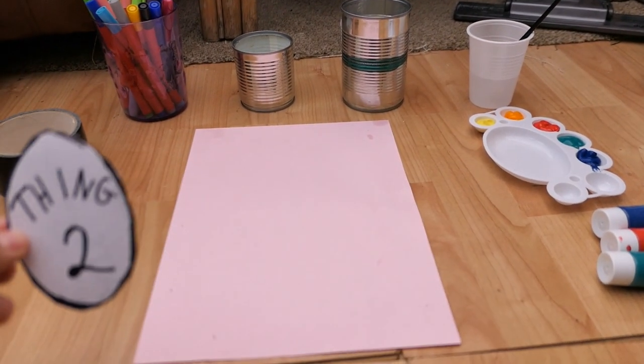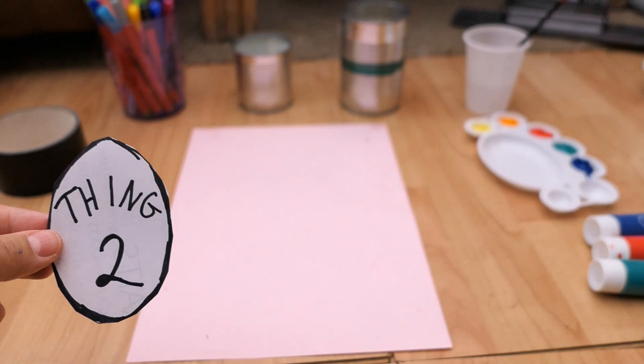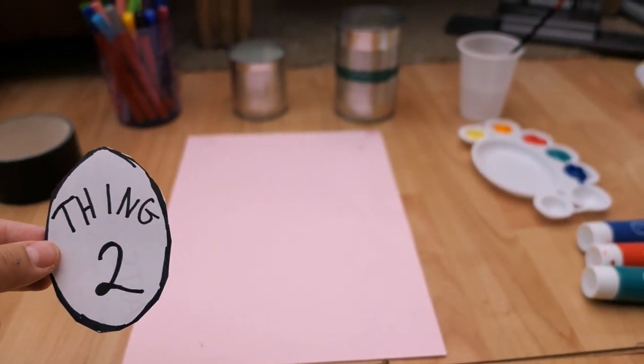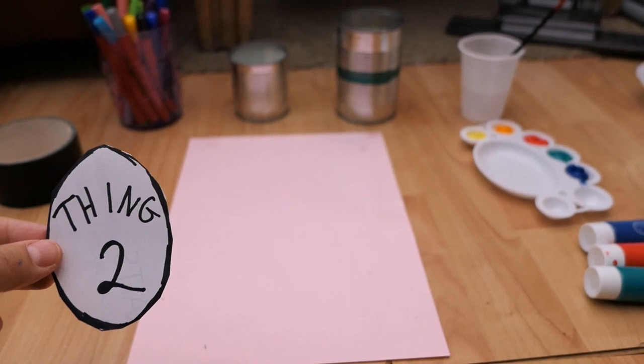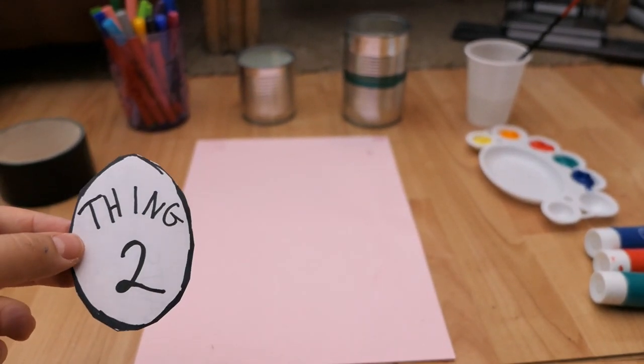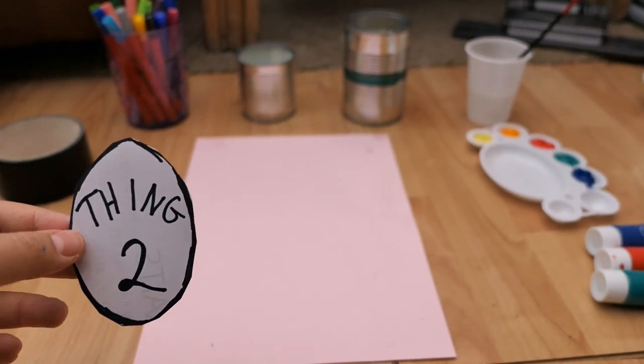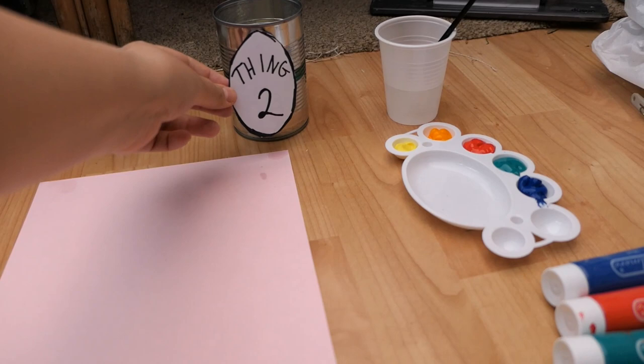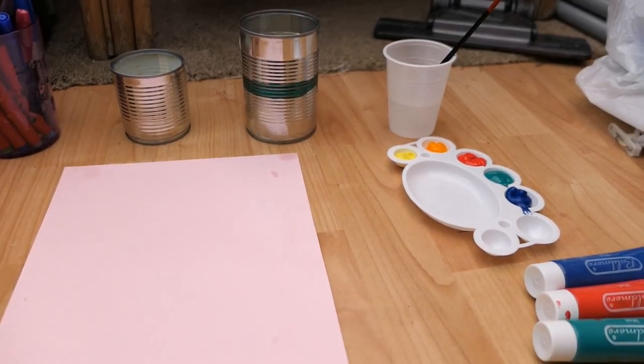I've also got some paper that I've cut out and I've just drawn Thing 2 on it. So if you've got two tins then for Dr. Seuss you can draw Thing 1 and Thing 2 on the circular piece of paper and that later on will be stuck on the tin like this, but we need to paint it first.